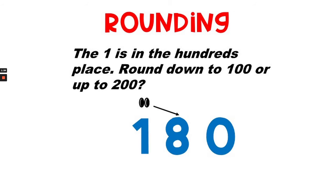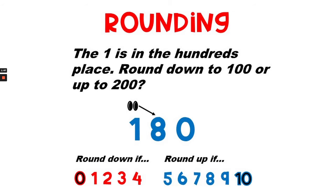This number is 180. We want to look at the 8. The 1 is in the hundreds place. We round down to 100 or up to 200? Well, the number to the right of 1 is 8, so we round up. Round up to 200 because the 8 is closer to 10.